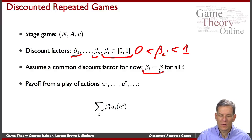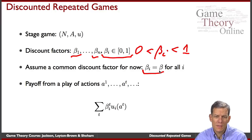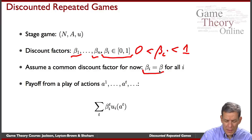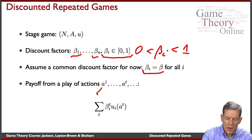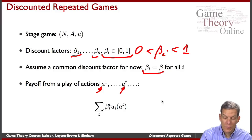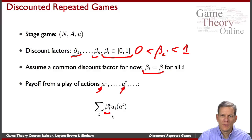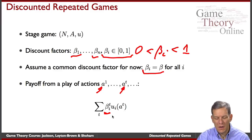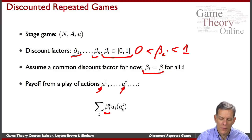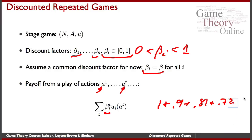Often in these games, people look at situations with a common discount factor, so everybody has the same discount factor, which makes things fairly easy in some cases. The payoff from a whole sequence of actions — profile A1 played in the first period, AT in the t-th period, and so forth — is just the sum of these payoffs weighted by an exponentially decreasing function, the discount factor raised to the power of t. So if the payoff was 1 every day, you'd get 1 today plus 0.9 plus 0.81 plus 0.72, and so on.